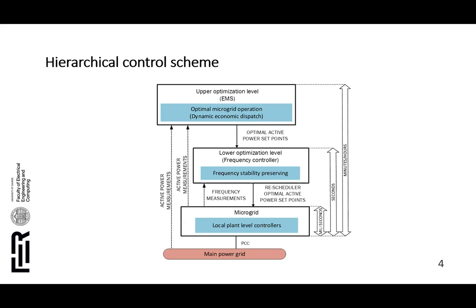The first level is an economic problem that minimizes overall operating costs of the microgrid. The lower optimization level, which we call the frequency controller, is the second level and is in charge of frequency primary reserve provision in grid-connected mode. We analyze only grid-connected mode in this paper, although that will be extended. The second level uses a more accurate representation of specific devices within the microgrid and solves a real-time control problem on an aggregated level.